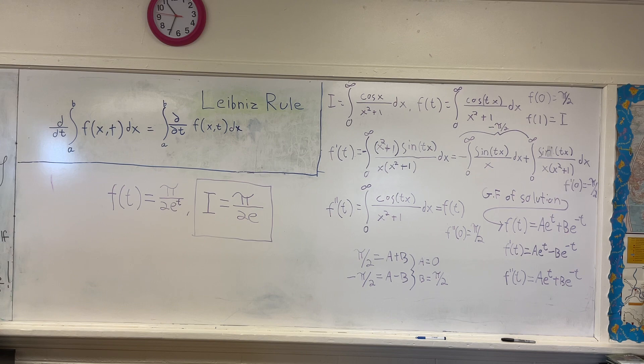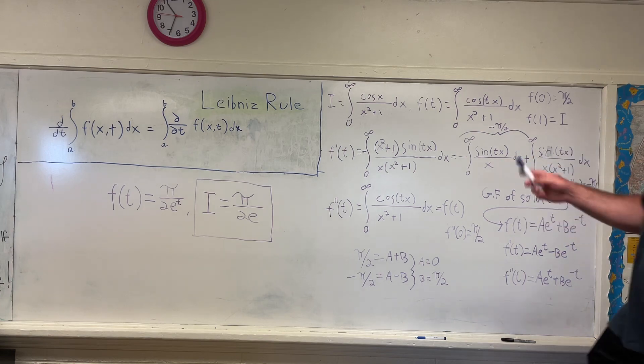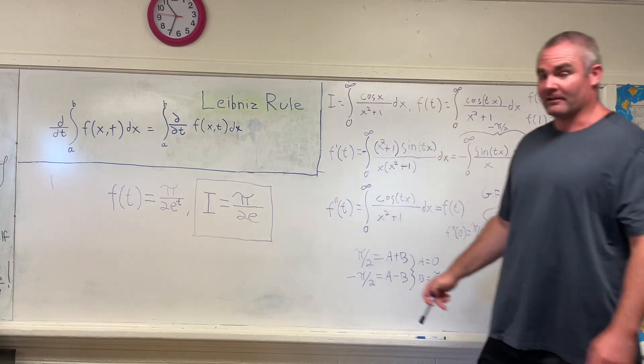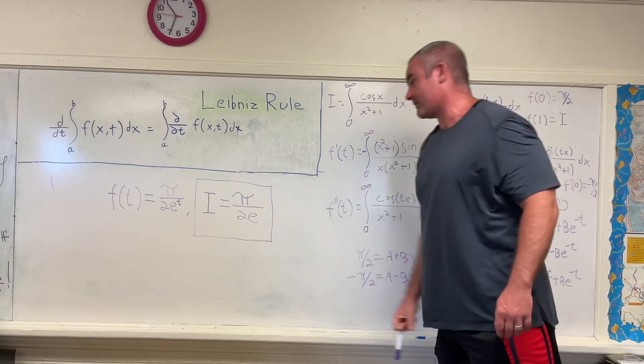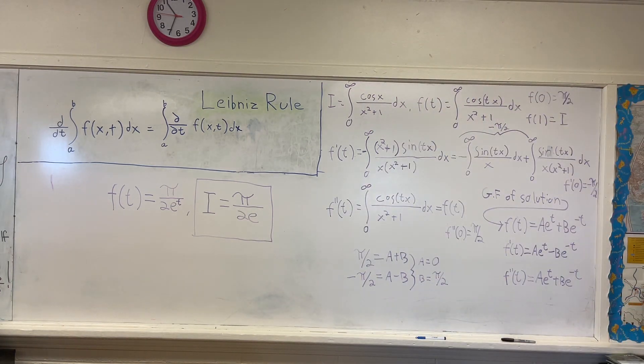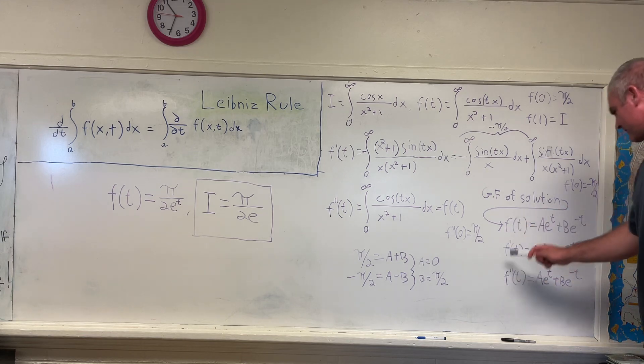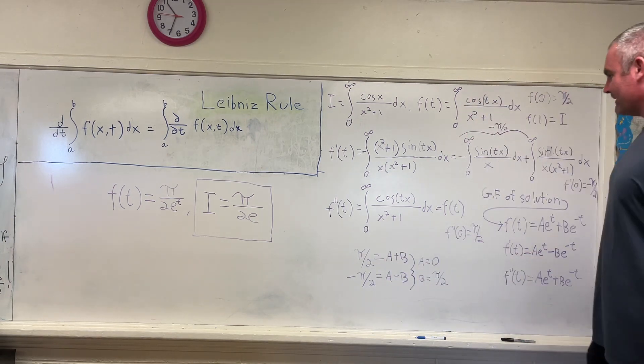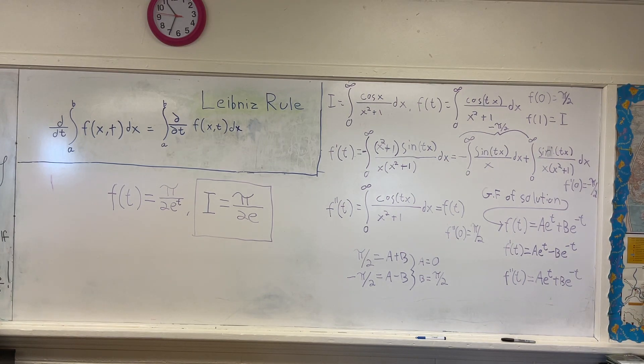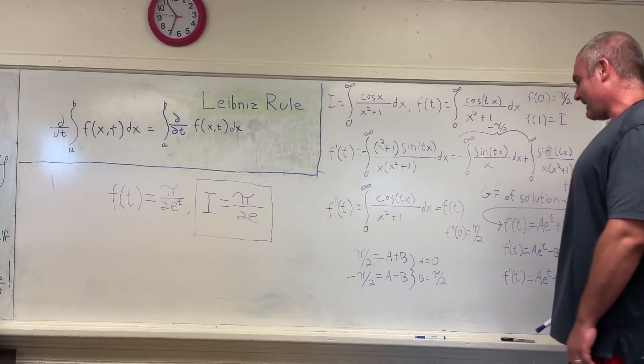But in any case, I know that picking f prime of 0 being equal to negative pi over 2 is the correct thing to pick, because it gives you the right answer. I verified this answer with contour integration and with a calculator. This is definitely the answer that we get. So we have the expressions for f of t, f prime of t, and f double prime of t. And when we plug in our values for those, we get the following system of equations. We get that pi over 2 is equal to a plus b. And we get that negative pi over 2 is equal to a minus b.